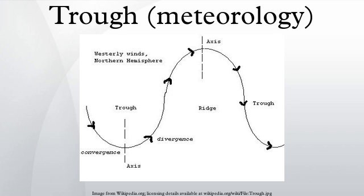A trough is an elongated region of relatively low atmospheric pressure, often associated with fronts. Unlike fronts, there is not a universal symbol for a trough on a weather chart.